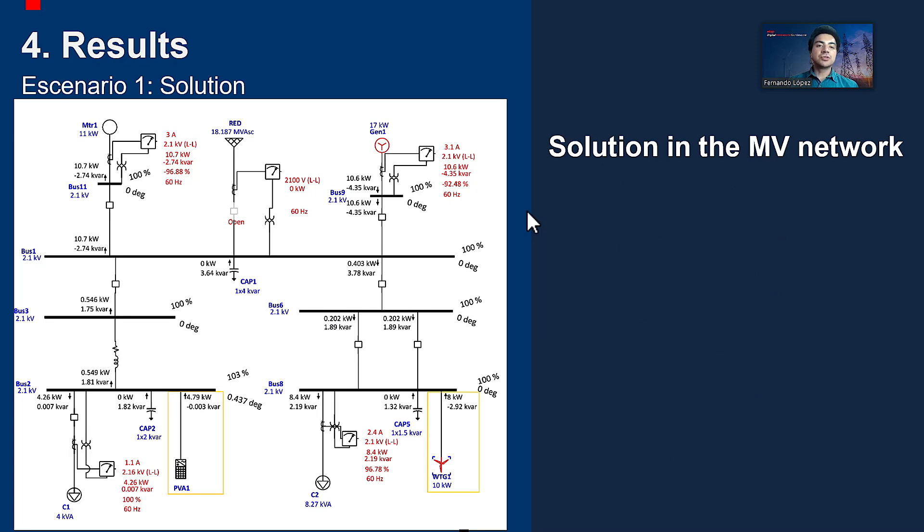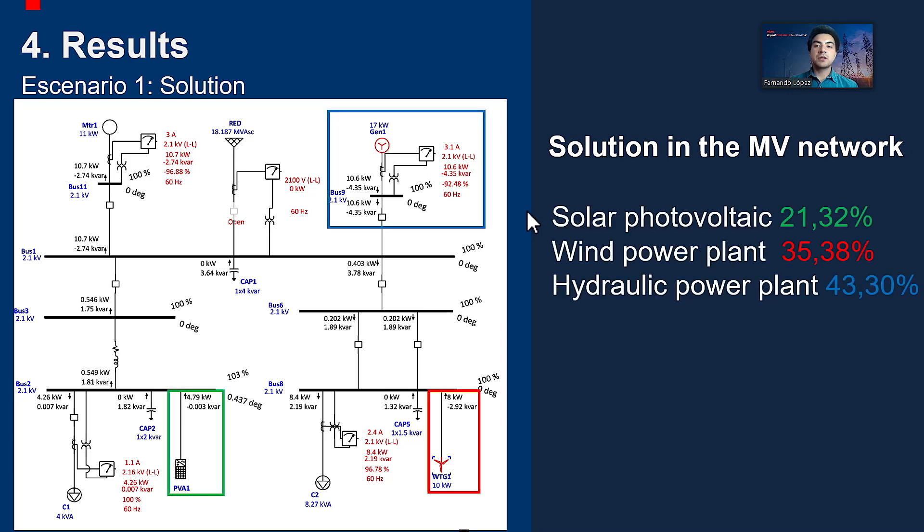As a solution to the overload, two renewable energy sources are proposed, with the photovoltaic plant supplying 21.32% and the wind power plant 35.38% of the demand.